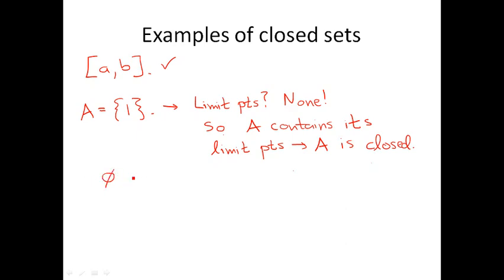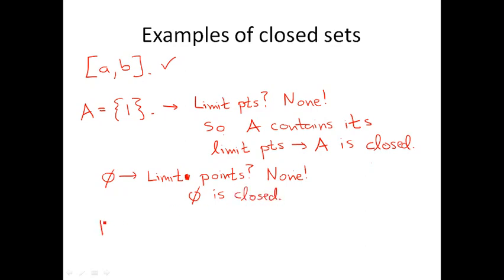What about the empty set? What are the limit points of the empty set? Again, there are none. So, vacuously, the empty set is closed. And the real line? What are all the things realizable as sequences of real numbers? In this case, the limit points are exactly all of the real line again. Does ℝ contain all of ℝ? Yes, of course. So ℝ is closed. We notice something particular: the empty set and ℝ are both open and closed.